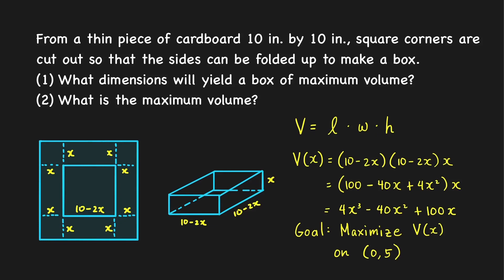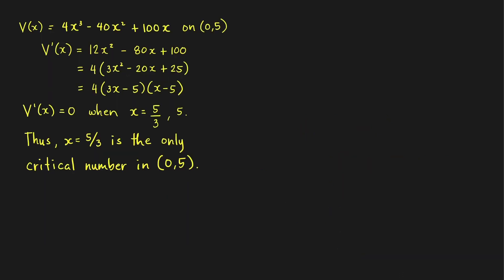To find the x that maximizes the volume function, it must be a critical number. To find the critical numbers we compute the derivative: V'(x) = 12x² minus 80x plus 100, where the derivative of 4x³ is 12x², the derivative of minus 40x² is minus 80x, and the derivative of 100x is 100.